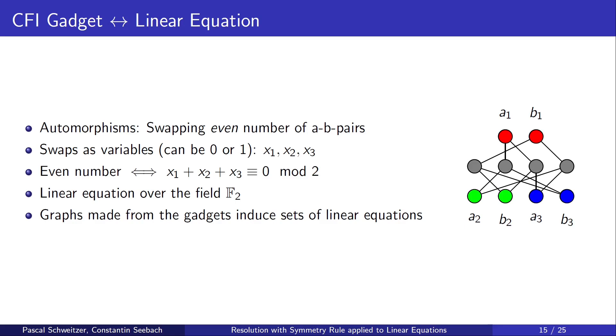Previously, I talked about the relation between multipede graphs and linear equations. This actually comes from the CFI gadget. It is known that the symmetries of the CFI gadget are exactly those where we swap an even number of A-B pairs. If we encode these swaps as variables, then an even number means that the sum of these variables is equal to 0 modulo 2. This is exactly a linear equation over the field F2. Then graphs made from these gadgets induce sets of linear equations.